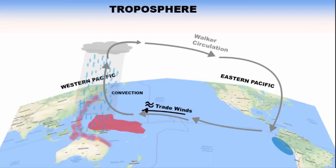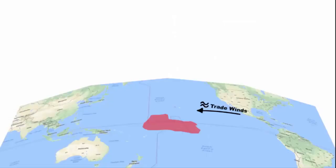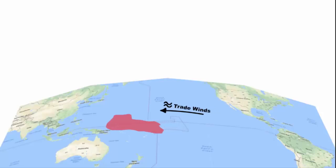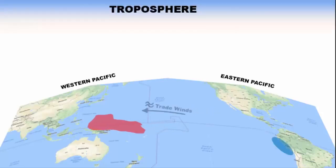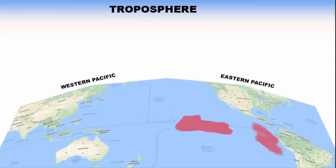That was the neutral phase. Now comes the second phase — El Niño. In the neutral phase, trade winds played an important role in pushing the warm ocean current towards the western Pacific. In the El Niño phase, the trade winds are weak. There are few months in a year when trade winds are weak, and when that happens, the warm ocean current does not get any push. As a result, the warm pool of ocean water at the western Pacific slowly moves towards the central and eastern side of the Pacific Ocean.